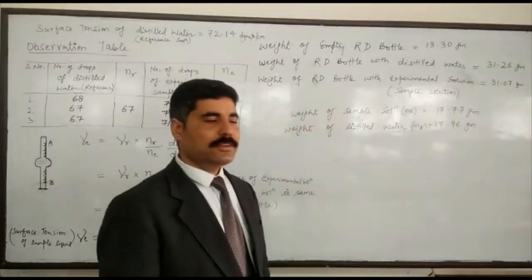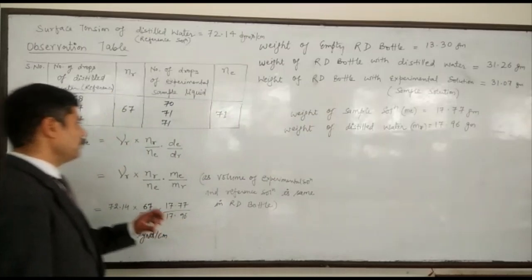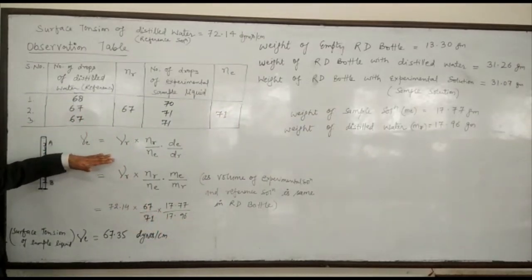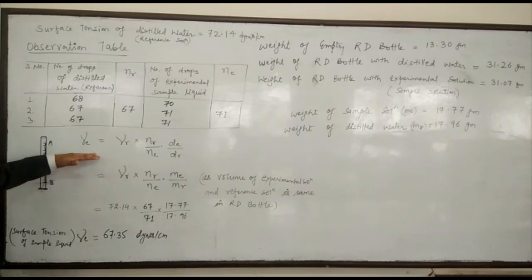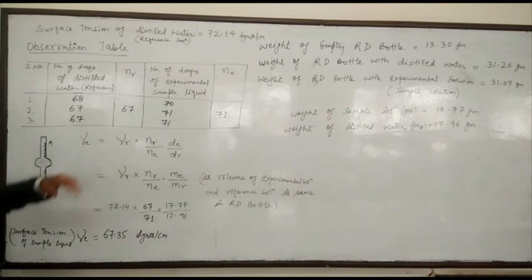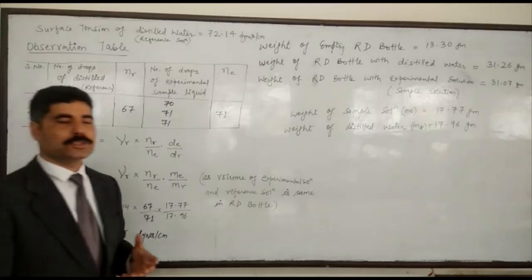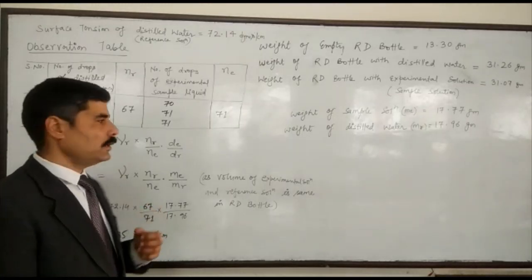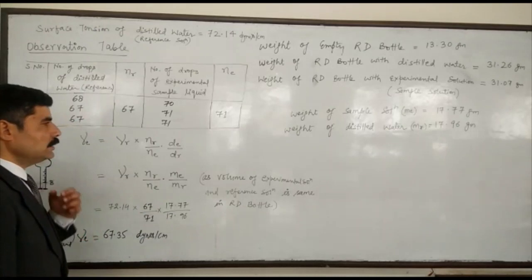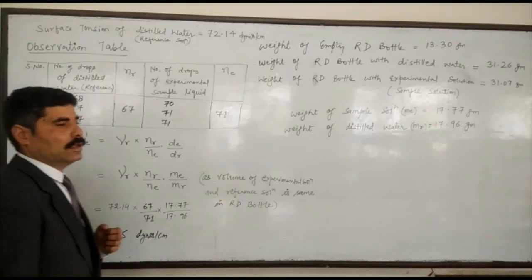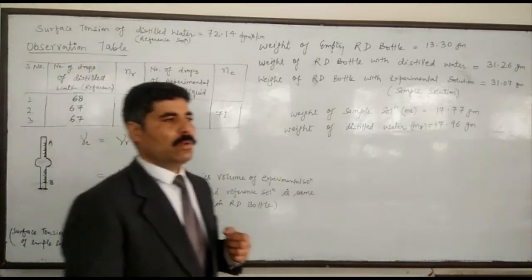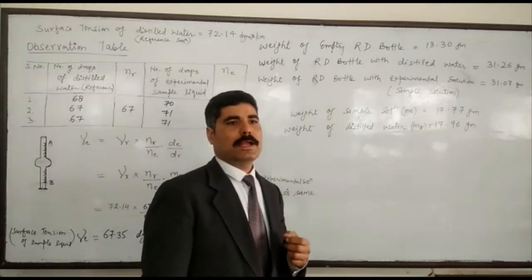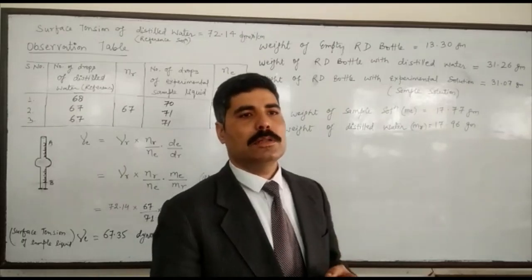The surface tension of the liquid is calculated by a formula which states that surface tension is inversely proportional to the number of drops and directly proportional to the density. The density of the liquid is determined with the help of the RD bottle.